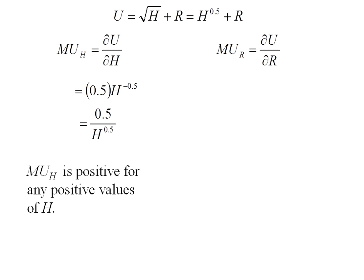Looking at this, we can see that any positive value of H that I plug in, marginal utility is also going to be positive. Taking the derivative of utility with respect to R, we get 1. 1 is always positive for any positive values of R.